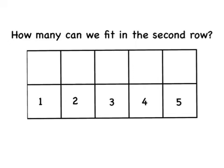If I can fit 5 in the top row, how many can I fit in the second row? Well, they're equal, right? So there's only 5 in the top row. There must only be 5 in the bottom row. 1, 2, 3, 4, 5.